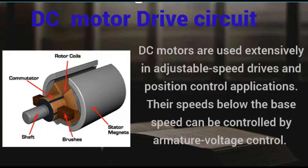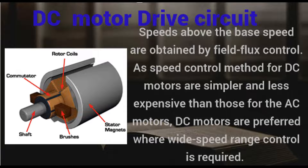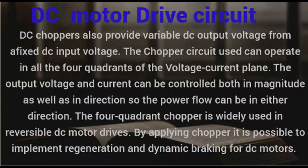DC motors are used extensively in adjustable speed drives and position control applications. Their speeds below the base speed can be controlled by armature voltage control, while speeds above the base speed are obtained by field flux control. Speed control methods for DC motors are simpler and less expensive than those for AC motors, making DC motors preferred where wide-speed range control is required. DC choppers provide variable DC output voltage from a fixed DC input voltage, and the chopper circuit can operate in all four quadrants of the voltage-current plane, allowing power flow in either direction. The four-quadrant chopper is widely used in reversible DC motor drives, enabling regeneration and dynamic braking.